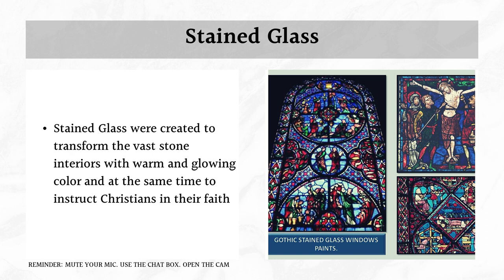Lastly, we have stained glass — perhaps the most important art form that the medieval period contributed to the history of art. Stained glass was created to transform the vast stone interiors of churches with warm and glowing colors, and at the same time to instruct Christians in their faith. Stained glass is found mostly in churches, and it creates a dramatic effect — once light passes through it, the visual it produces feels heavenly and grand.